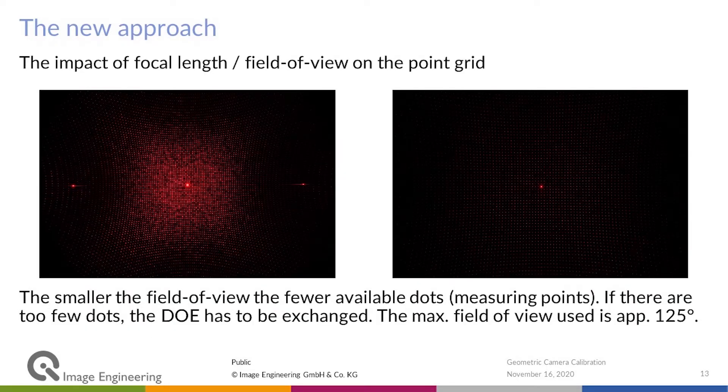These are two example images. On the left-hand side, you see an image captured with a camera that has about a 125-degree field of view. On the right-hand side, you see an image that was captured with a camera of about a 100-degree field of view.